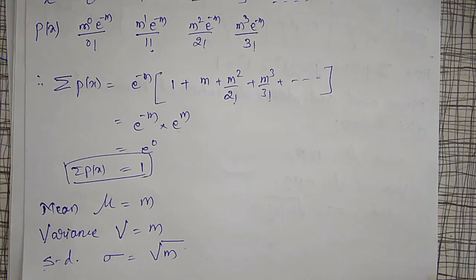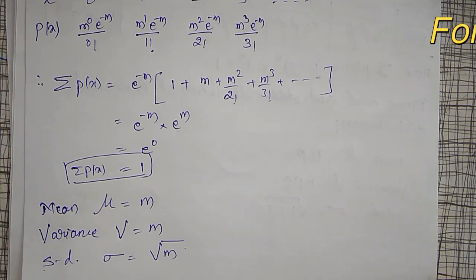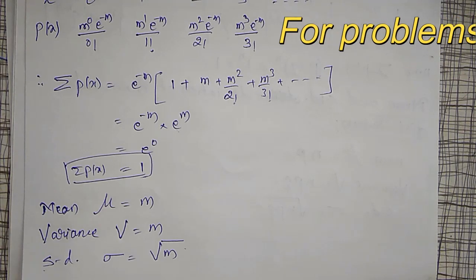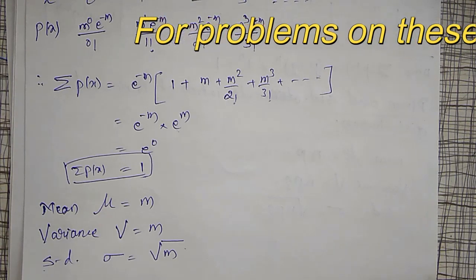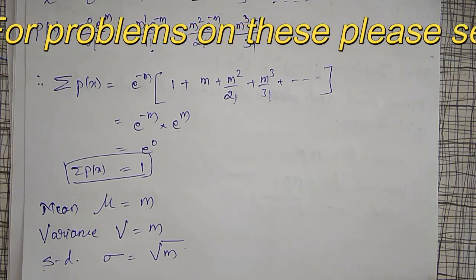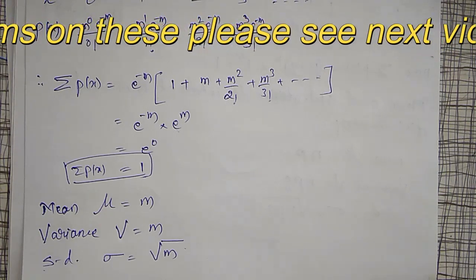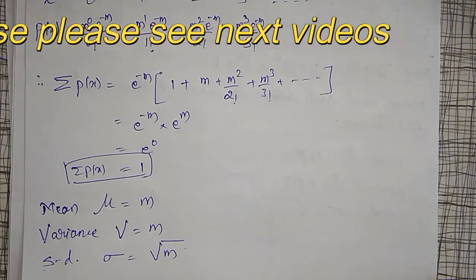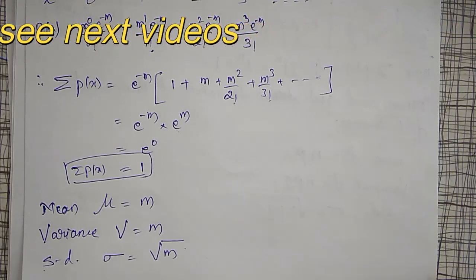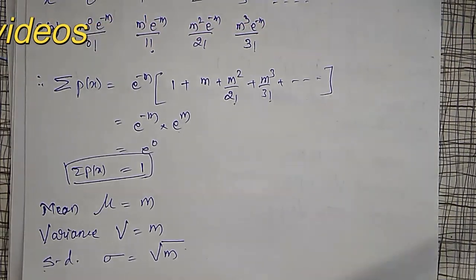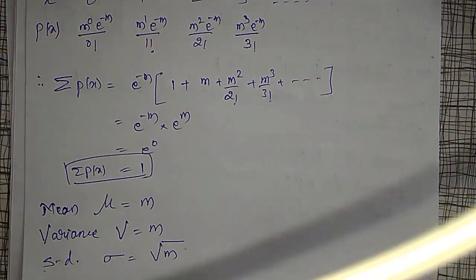This concludes the introduction to the probability distribution functions of binomial and Poisson distributions. Using these properties we will solve some examples. Please subscribe to the channel and share your comments for further improvements. Thank you.